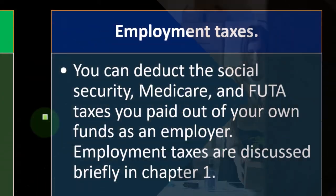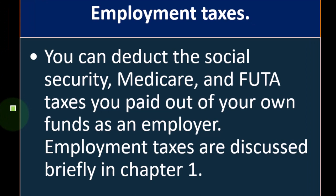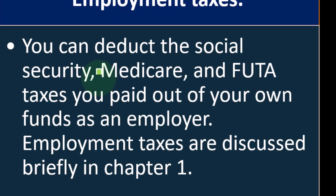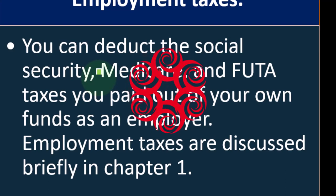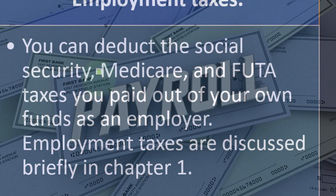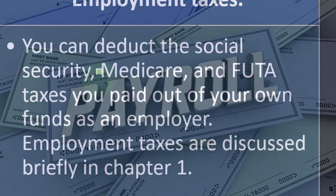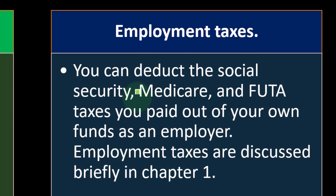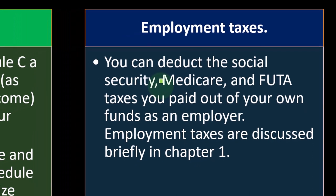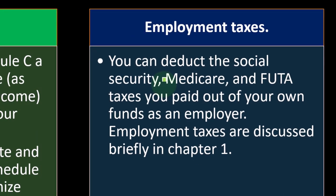If you have employees as a sole proprietor, you'll have to handle payroll withholdings. The employee pays half of Social Security and Medicare, and you match the other half of Social Security and Medicare, as well as FUTA — federal unemployment tax — and possibly state payroll taxes. The employee's withheld Social Security and Medicare are part of their wages paid to the government on their behalf. But the employer's matching portion — our Social Security, Medicare, and FUTA — is a payroll tax expense.